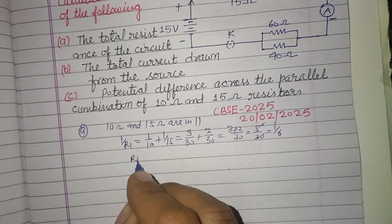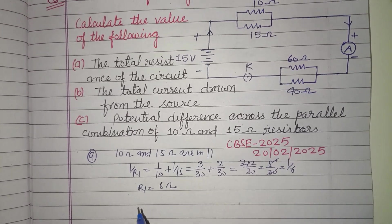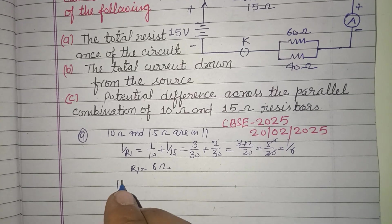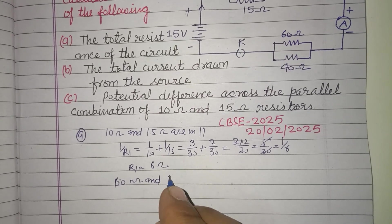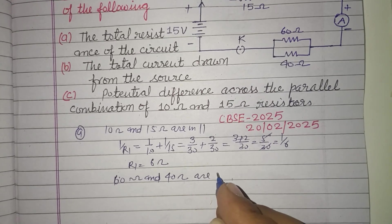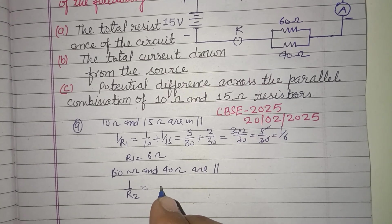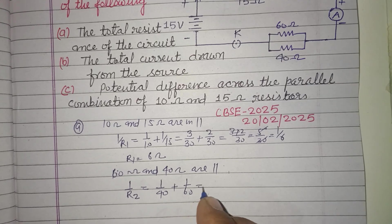And here 60 ohm and 40 ohm are also in parallel combination. Therefore their equivalent resistance, 1 upon R2 is equal to 1 by 40 and 1 by 60.